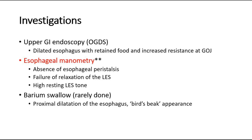The gold standard in the diagnosis of motility disorders is esophageal manometry. This procedure involves a pressure-sensitive probe inserted into the esophagus, approximately 5 cm proximal to the lower esophageal sphincter, which measures the pressure of the sphincter and surrounding muscle. In achalasia, the three key features on manometry are absence of esophageal peristalsis, failure of relaxation of the lower esophageal sphincter, and a high resting lower esophageal sphincter tone.